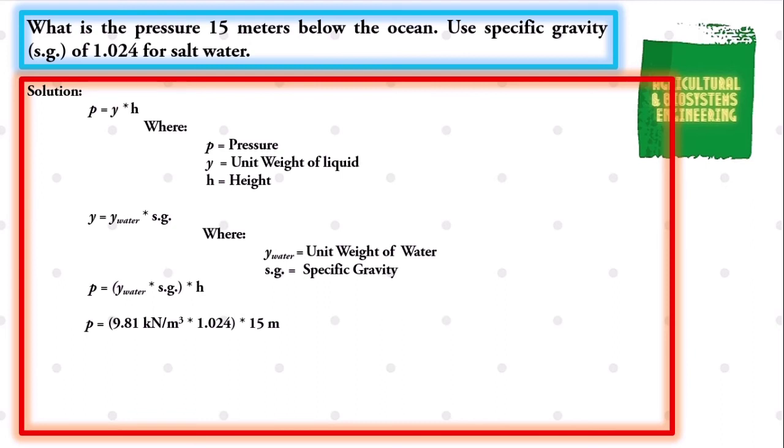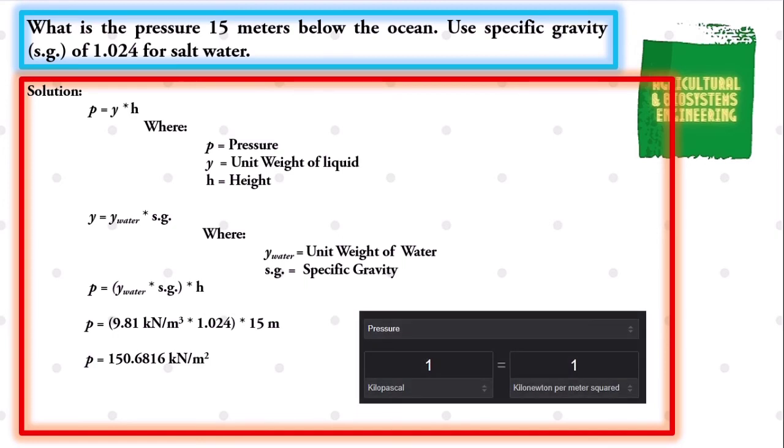We simply solve and we have the value for pressure to be 150.6816 kilonewton per square meter. We know that 1 kilonewton per square meter is the same as 1 kilopascal. So we convert and we have a final value for our pressure to be 150.6816 kilopascal.